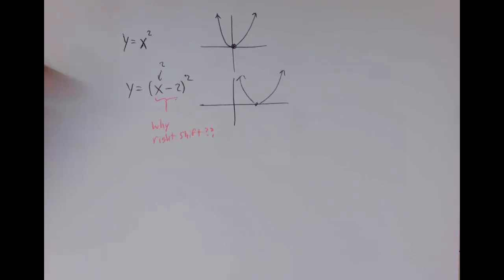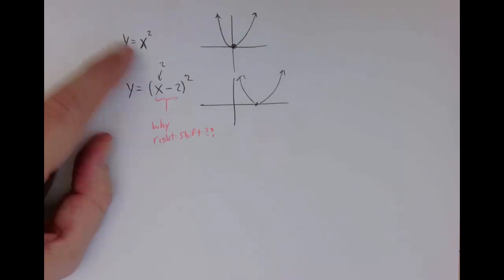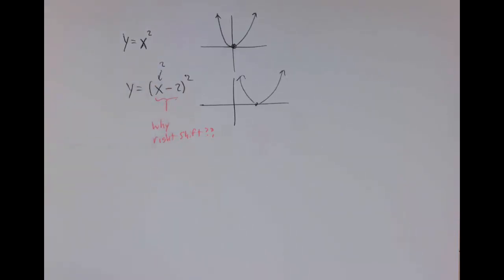Was that a complete sentence? Let's try this again. We want an input that's going to act like the old input 0. So what input acts like the old input 0? Whatever input is going to result in 0 when you apply that inside transformation.